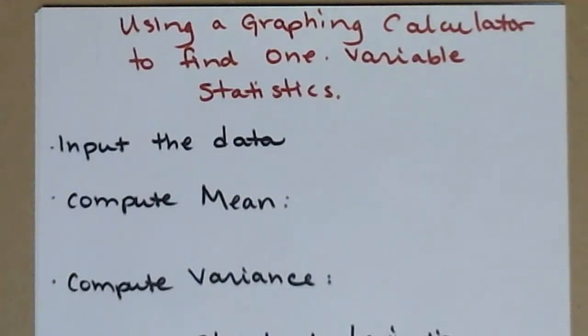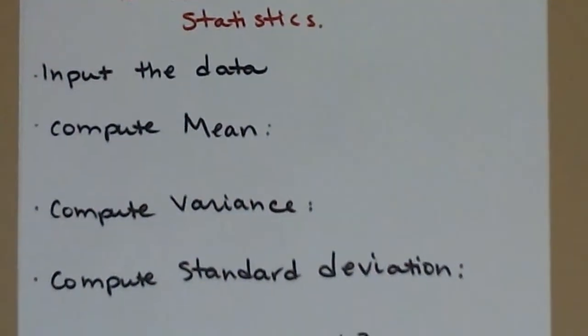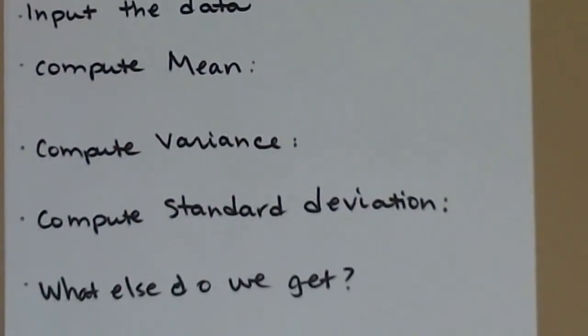I'm going to do a brief demonstration on how to use a graphing calculator to find one-variable statistics on a list of data that I compiled. I'll show you how to input the data and then the buttons to push to find the mean, the variance, standard deviation, and we'll see what else we can get.